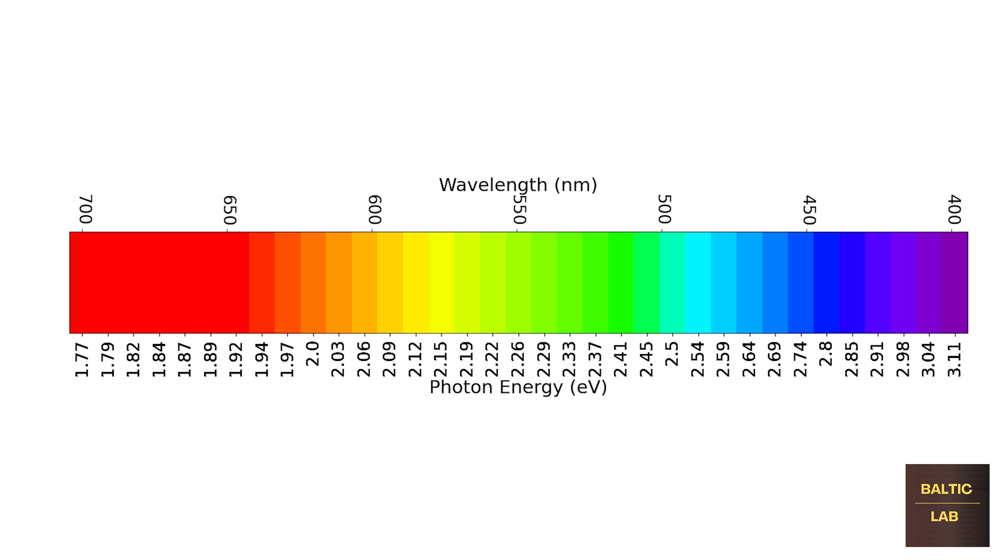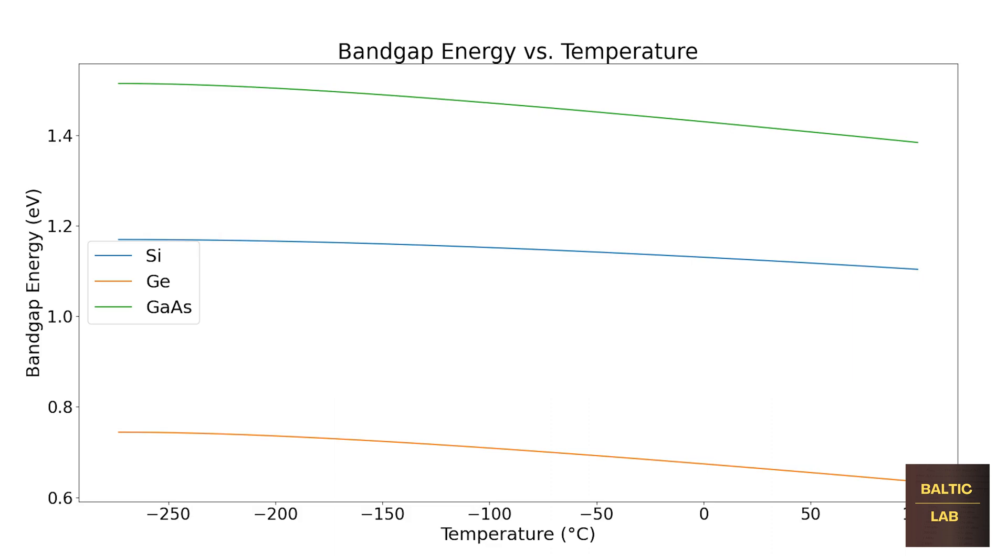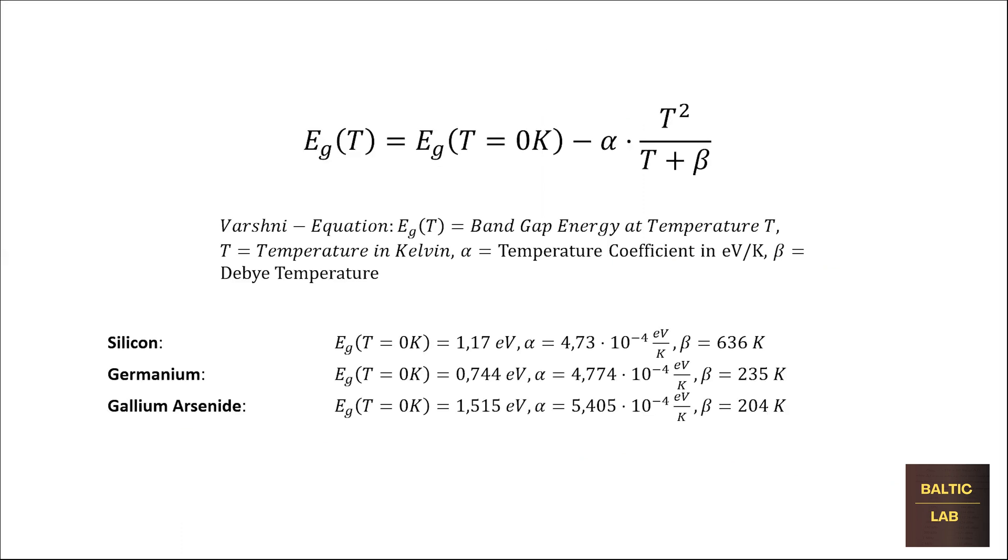The band gap energy, and thus the energy of the emitted photons, depends a lot on the temperature. It increases with decreasing temperature and decreases with increasing temperature, according to the equation shown here.